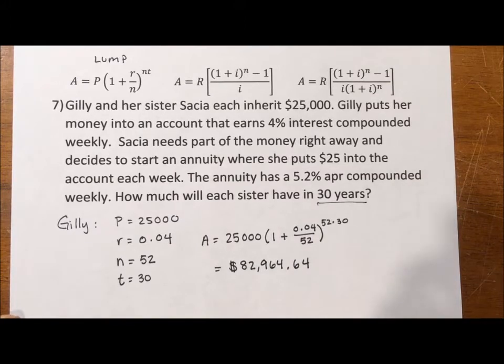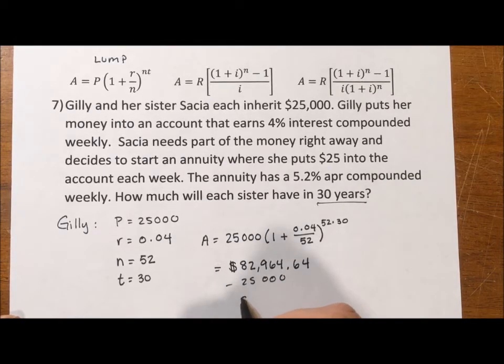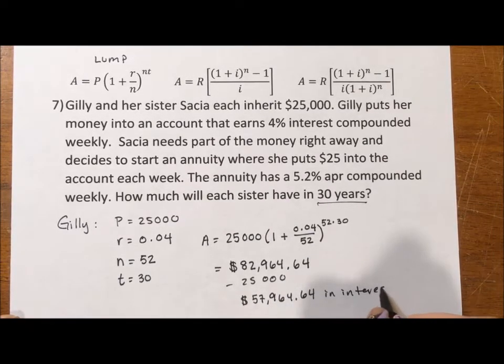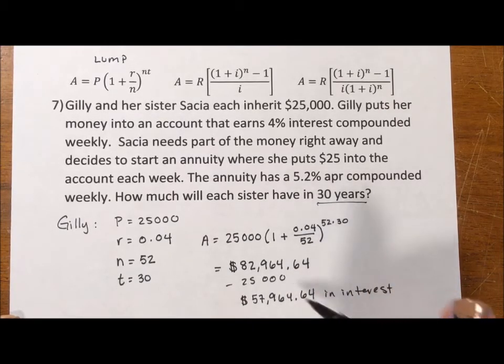So what she's earned in interest, if we subtract the $25,000 out of this, is she's gotten $57,964.64 in interest. So she's done more than tripling her money because this is all the interest she has earned on this account.